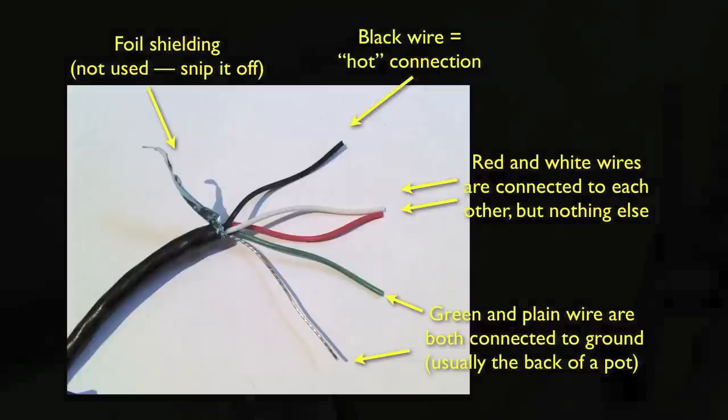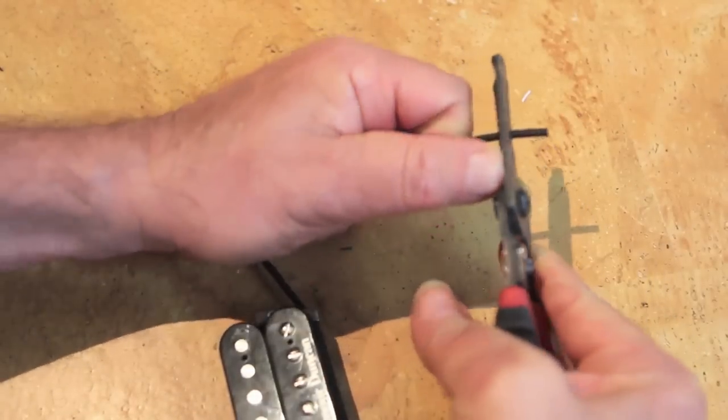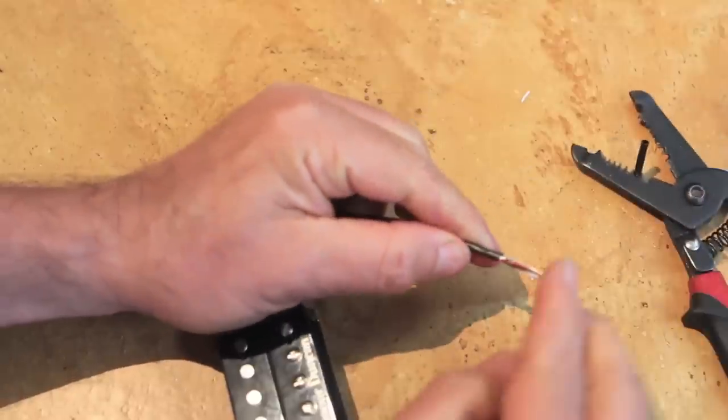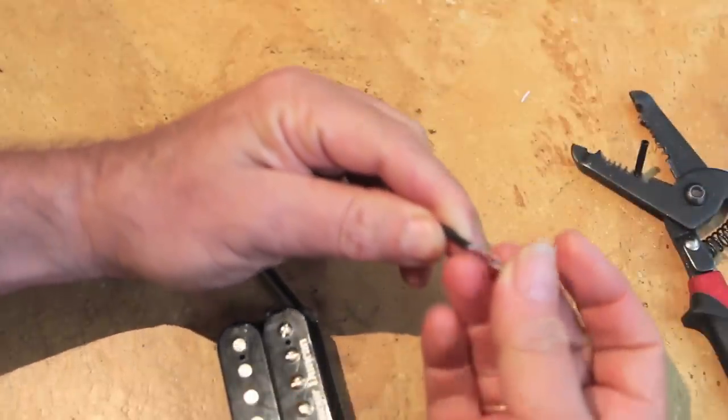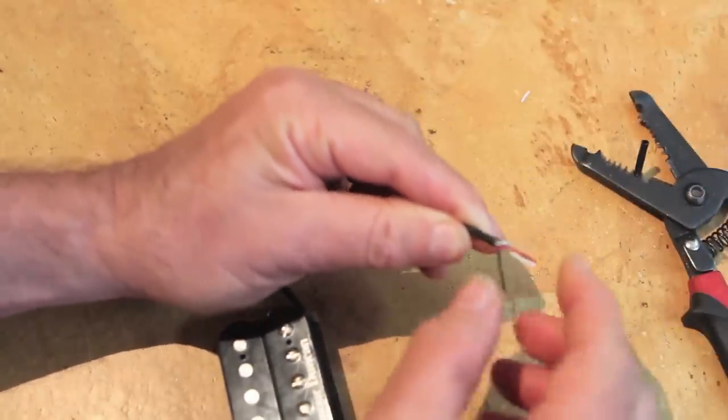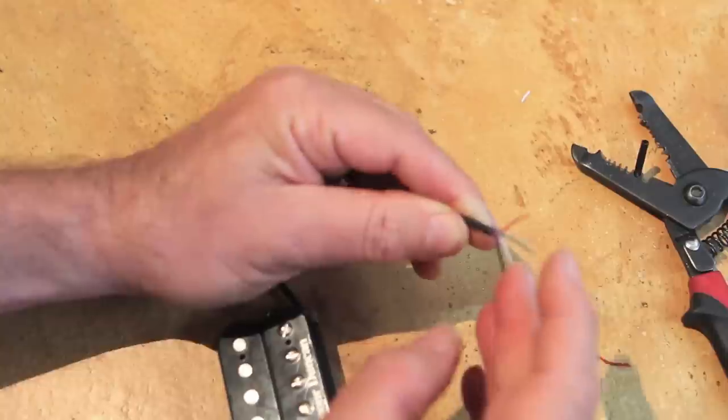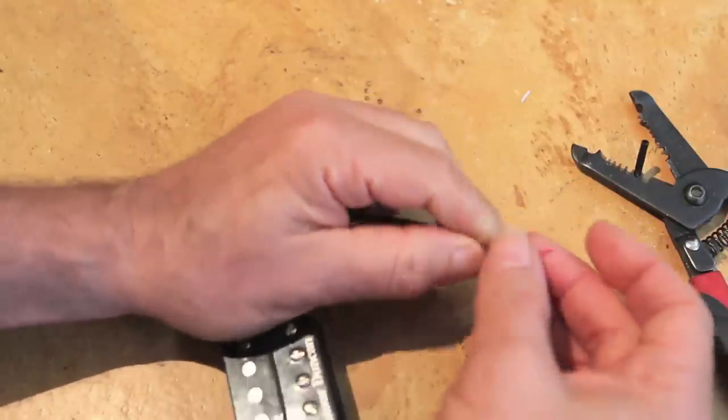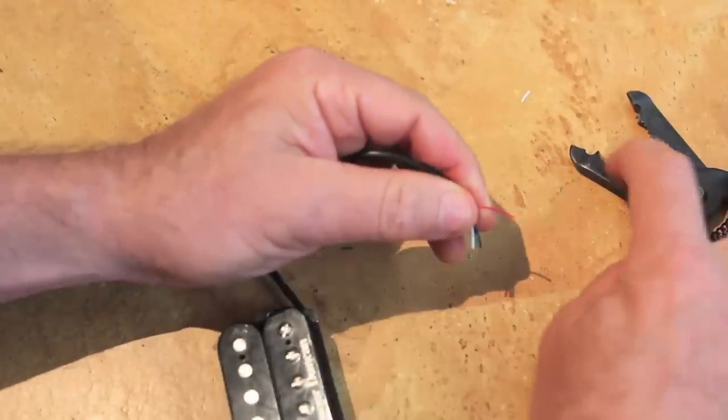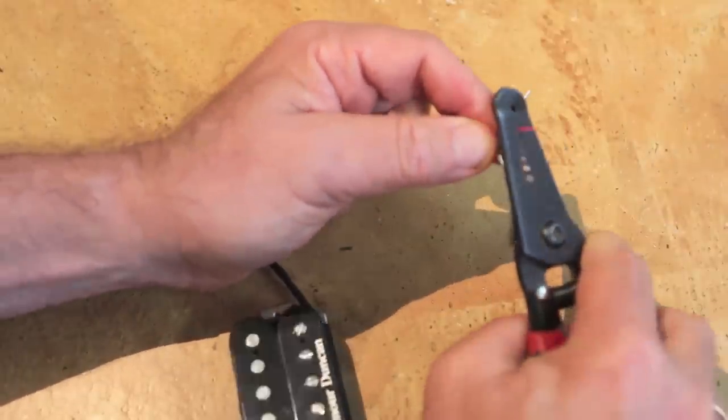Now, while we're on the subject, let's go ahead and prep the wires for the pickup we're going to be installing. I'm stripping away the outer shielding with my wire stripper, and I can see that there's five different wires in there. Four of them are shielded, and I'm going to use the wire stripper to strip away the shielding from those four.